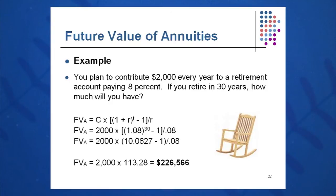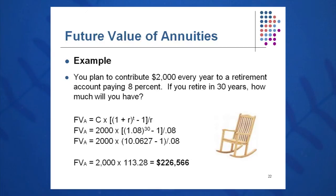So C is $2,000, times (1 + R), which is 1.08, to the 30th power, minus one, all of that over R, which is 0.08. In this case, by investing $2,000 per year for the next 30 years at 8%, I'll have over $226,000 in my retirement account.